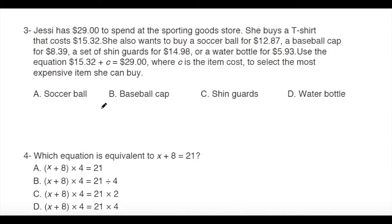Number three: Jessie has 29 dollars to spend at the sporting goods store. She buys a t-shirt that costs 15 dollars 32 cents. She also wants to buy a soccer ball for 12 dollars 87 cents, a baseball cap for 8 dollars 39 cents, shin guards for 14 dollars 98 cents, or a water bottle for 5 dollars 93 cents. Use the equation 15.32 plus c equals 29.00, where c is the item cost.